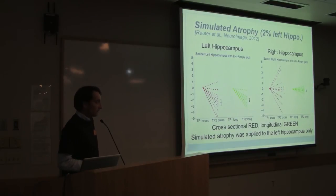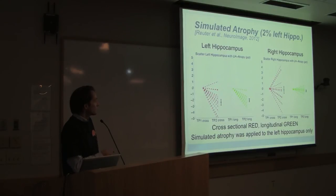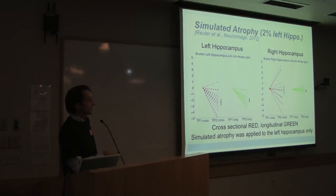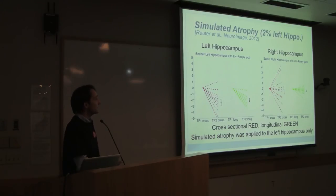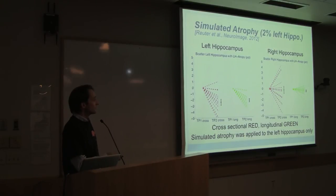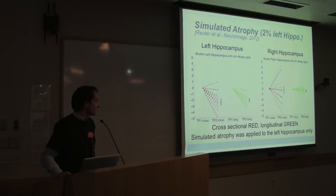We also tested whether we can accurately find atrophy. We simulated around 2% atrophy in the left hippocampus in several subjects. The cross-sectional processed data finds approximately the 2% decrease, but the longitudinal stream finds it more accurately and with less variability. Importantly, in the right hippocampus — where no change was introduced — the cross-sectional stream still shows lots of noise due to changes elsewhere in the brain, while the longitudinal stream has much less variability.